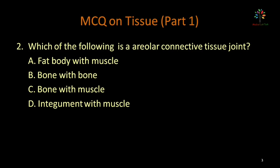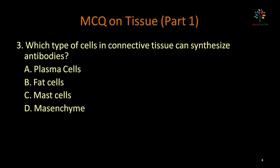Question two: which of the following is the areolar connective tissue joint? Options: pad body with muscle, bone with bone, bone with muscle, integument with muscle. Bone to bone joints have connective tissue like cartilage, known as the areolar tissue joint. So the answer is bone to bone.